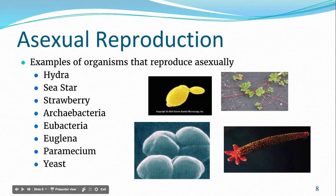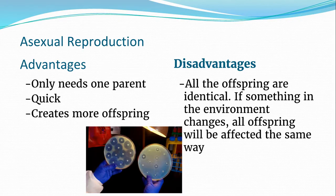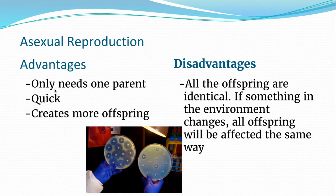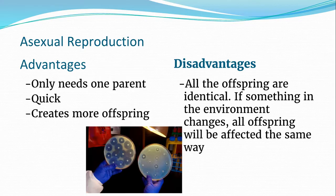That's asexual reproduction. Now let's talk about the advantages and disadvantages of this process. The first advantage is that you only need one parent — one source of DNA. So if you're by yourself, you're in luck. It is a relatively quick means of reproduction, especially for bacteria — you can go from one individual to several millions in a relatively short amount of time. In biology, being able to reproduce and pass your genes on to the next generation is winning the game of life. The more you do that, the more successful you are in terms of reproduction, and it creates more offspring.